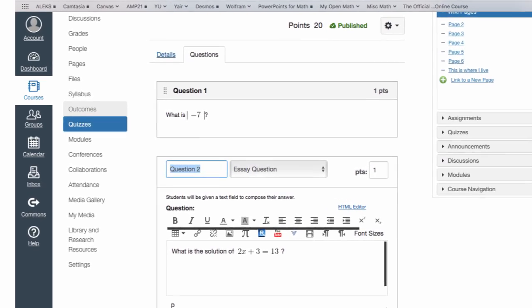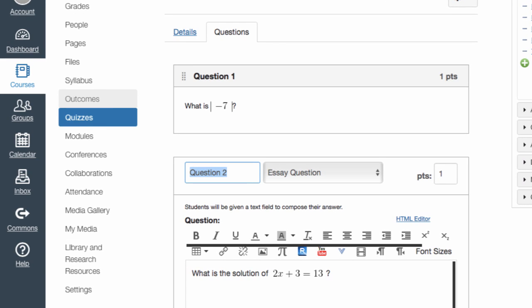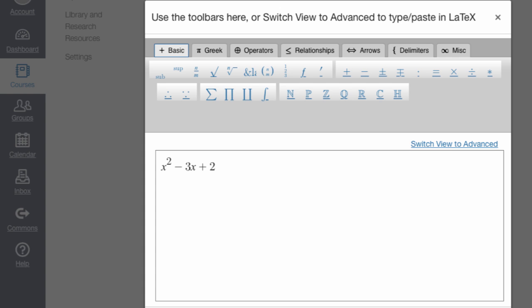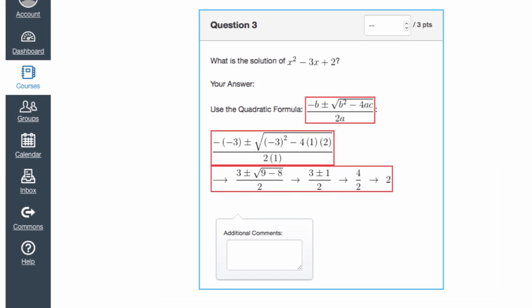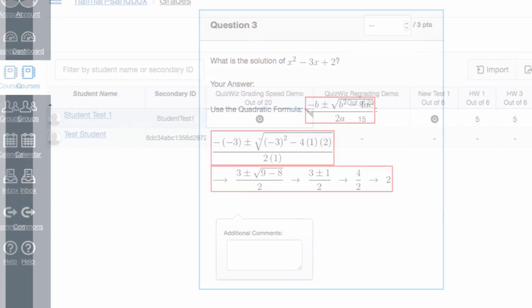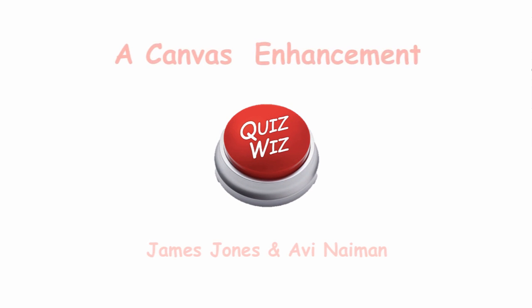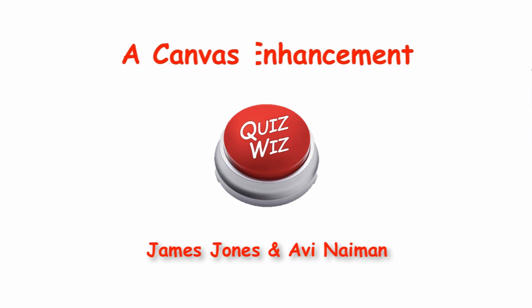One way to assign math homework in Canvas is to use quizzes made up of essay questions. Teachers can then create questions in the equation editor, and students can generate formatted math answers. Grading such quizzes, however, can be time-consuming. This video introduces QuizWiz to make this process more efficient.